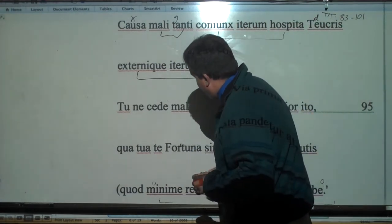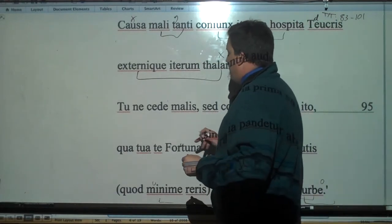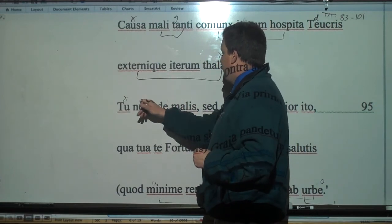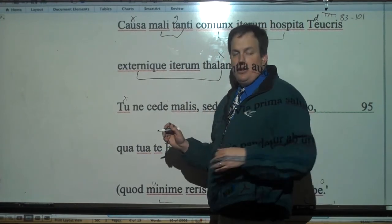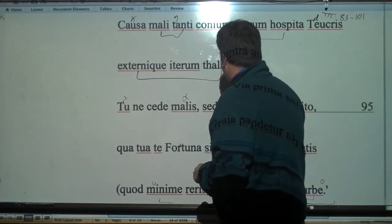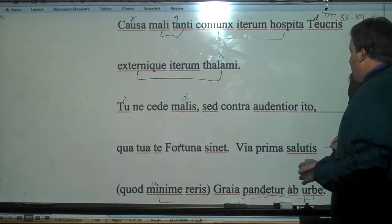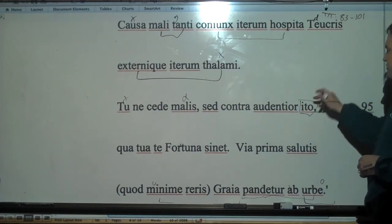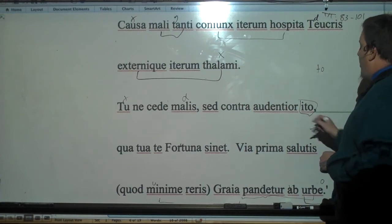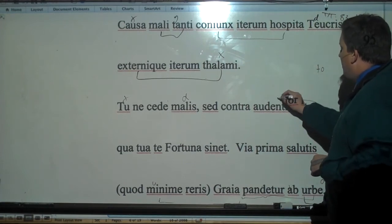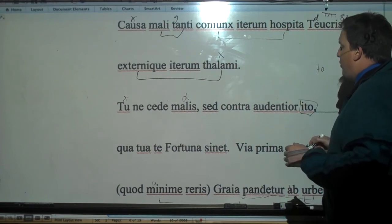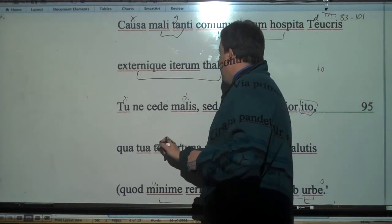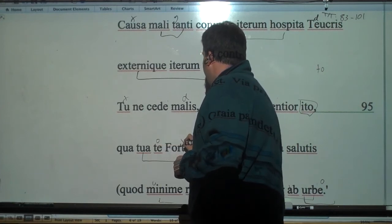And then she has the last command here. Tu ne cede malis - this is an imperative. You don't yield. And cede can take a dative when it means yield. Don't yield to misfortune. But on the contrary, adverb, ito. This is an imperative of 'go' but it's in the future imperative, a special imperative that sometimes ends in -to. Go. So go boldly, or as audentior, more boldly - it describes you. Go more boldly where fortune will allow you, where your fortune will allow you.